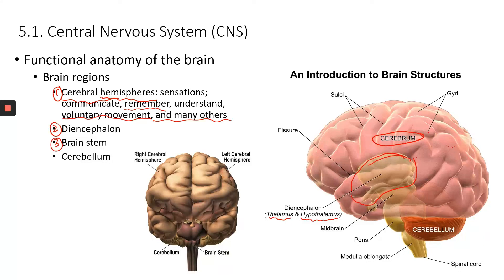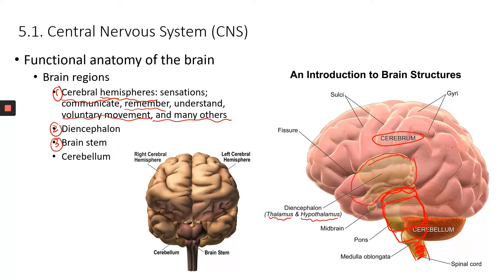The third region is the brainstem, which has three parts: the midbrain, the pons — which kind of sticks out a little bit — and the medulla oblongata. The brainstem connects the spinal cord to the brain, and inferior to the brainstem is the spinal cord.